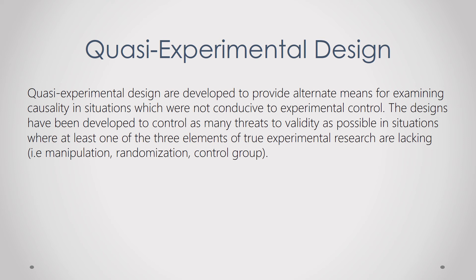It is difficult to provide a single example of a quasi-experimental design since it varies depending on the study. One example: what if parents of highly proficient students did not permit their children to be part of the experimental group because they didn't want their kids playing computer games? Those students would end up in the control group, resulting in a chance that less proficient students would make up the experimental group.